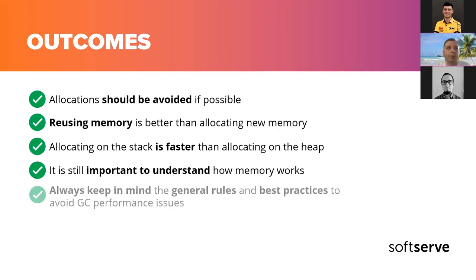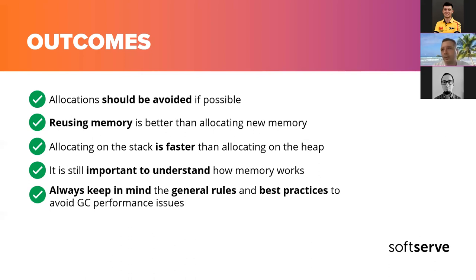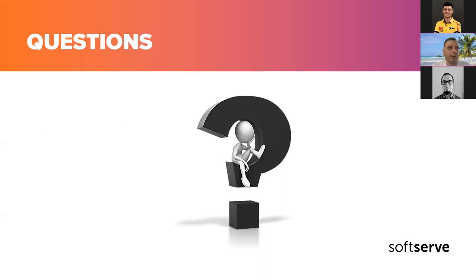Despite all the improvements, memory problems have not completely disappeared and it is still important to understand how memory works and how to deal with these problems. To avoid garbage collector performance issues in your .NET and .NET Core applications you should follow the best practices and general rules discussed. That's everything I wanted to show you today — maybe you have any questions, I will be happy to answer them.